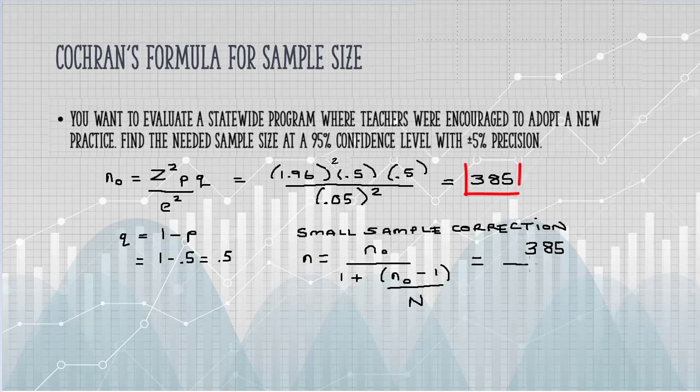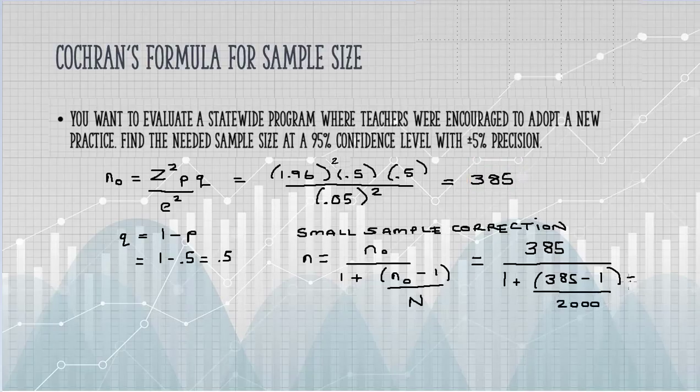The big N is the population size. Let's assume we're working with a small population of 2,000. Plugging that into the calculator, I get a reduced sample size of 323 for our small population.